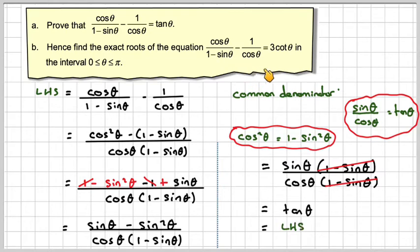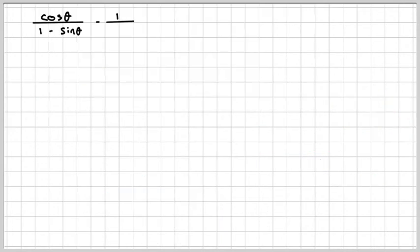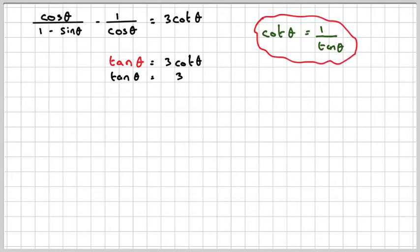We now use this to solve this equation equal to 3 cot theta. So we'll replace this now with tan theta is equal to 3 cot theta. Now, cot theta is 1 over tan theta. So tan theta will be 3 over tan theta. Multiplying by tan theta, we're going to get tan squared theta is equal to 3.